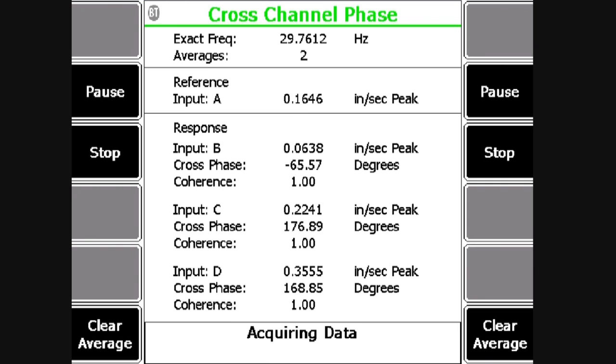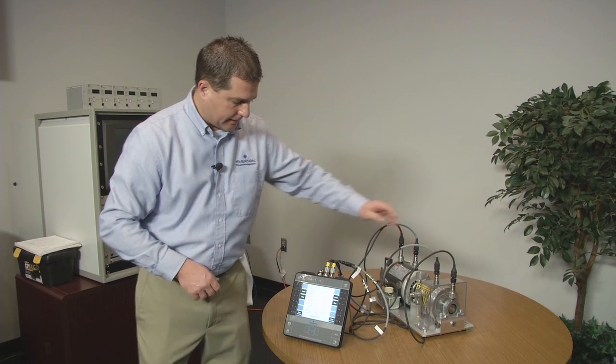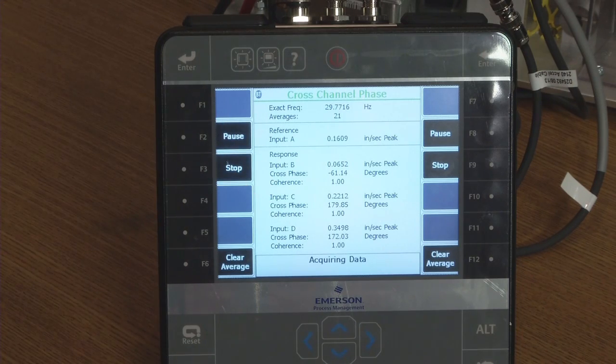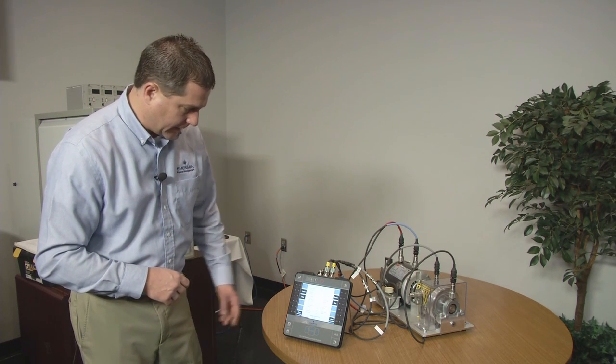So now I've got channel A as my reference. And then I'm seeing the cross-channel phase and coherence for channels B, C, and D. So my red is A, blue is B, gray is C, black is D. And so you can see my coherence is one for all of them. That means they're all receiving the same vibration from the same source because they're all on the same demo kit here.